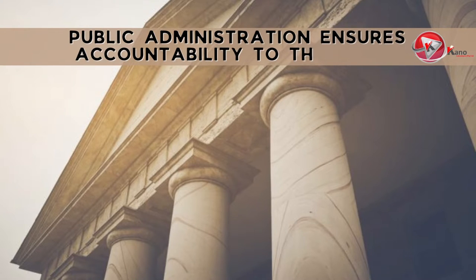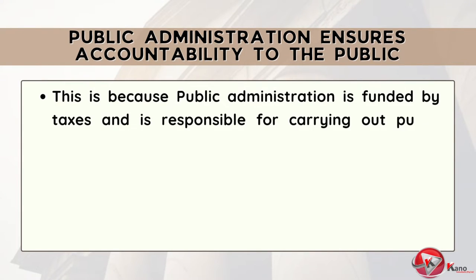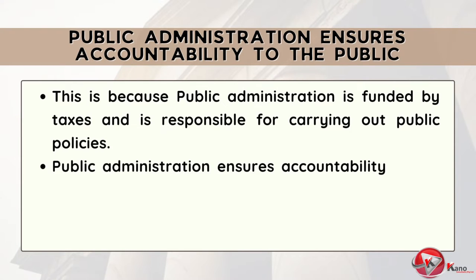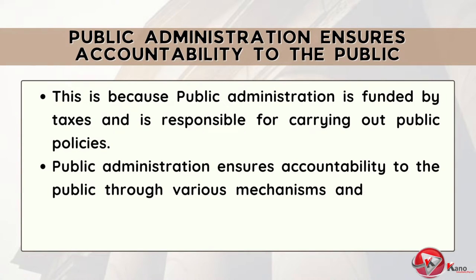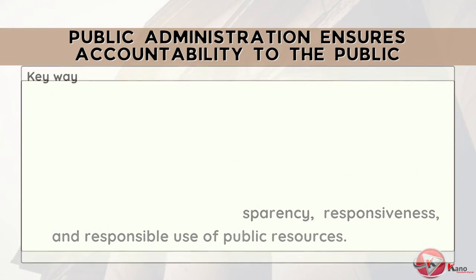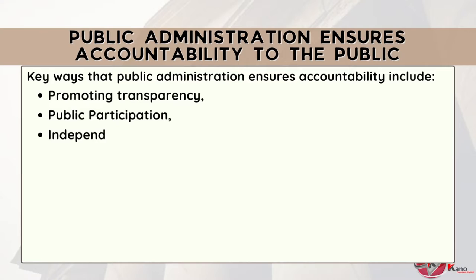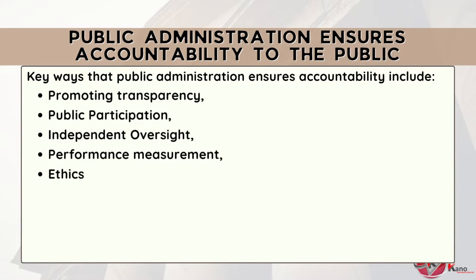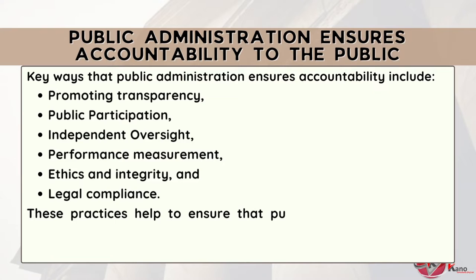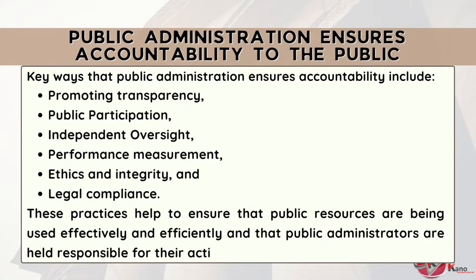Public administration is accountable to the public. This is because it is funded by taxes and is responsible for carrying out public policies. Public administration ensures accountability to the public through various mechanisms and practices that aim to ensure transparency, responsiveness, and responsible use of public resources. Some of the key ways that public administration ensures accountability to the public include promoting transparency, public participation, independent oversight, performance measurement, ethics and integrity, and legal compliance. These practices help to ensure that public resources are being used effectively and efficiently, and that public administrators are held responsible for their actions and decisions.